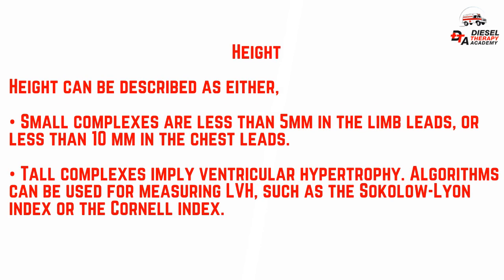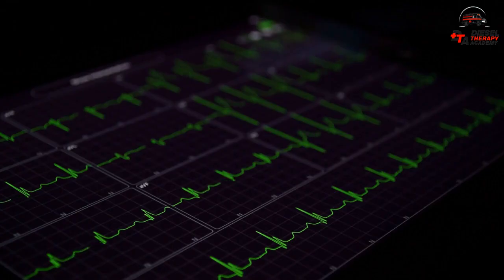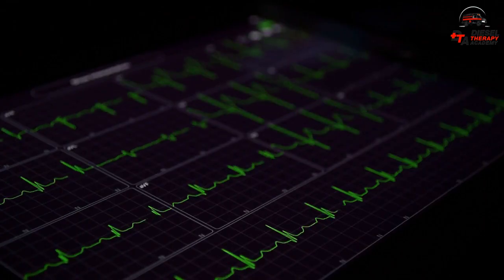Regarding height: small complexes are less than five millimeters in the limb leads, or less than 10 millimeters in the chest leads. Tall complexes imply ventricular hypertrophy. Algorithms can be used for measuring LVH, such as the Sokolow-Lyon index or the Cornell index. To assess morphology, you need to evaluate the individual waves of the QRS complex.